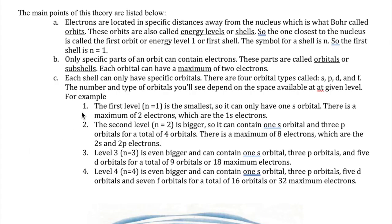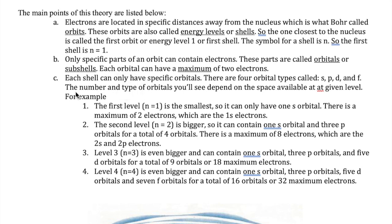The Bohr model of the atom and the realization that electrons can behave like waves created a new model of electron properties in the atom called the quantum mechanical model. The following are some important characteristics of this model.